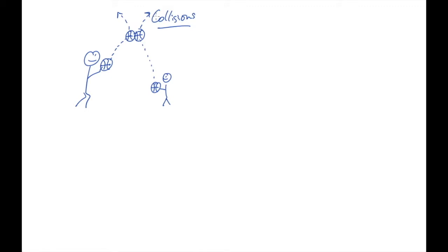And then I want us to think about these two basketballs as a system — as a thing. Let's first think about the individual basketballs. When they collide, this basketball that my kid threw exerts a force on the one that I threw. And it's probably going to be a pretty big force because it made a big deviation in how the basketball was moving.